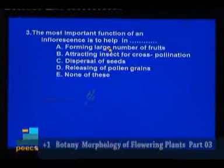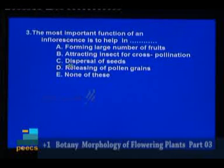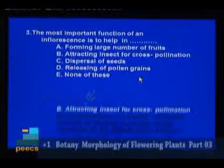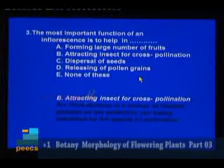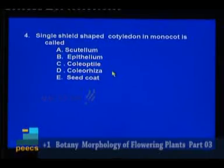Question 3: The important function of an inflorescence is to help in — A: forming large number of roots, B: attracting insects for cross-pollination, C: dispersal of seeds, D: releasing of pollen grains, E: none of these. When flowers are seen as a cluster, the pollinating agents can identify them easily. Answer: Option B, attracting insects for cross-pollination. Question 4: Single shield-shaped cotyledon in monocot is called — A: scutellum, B: epithelium, C: coleoptile, D: coleorhiza, E: seed coat. In monocot paddy seed, the single cotyledon is shield-shaped and called the scutellum. Answer: Option A.